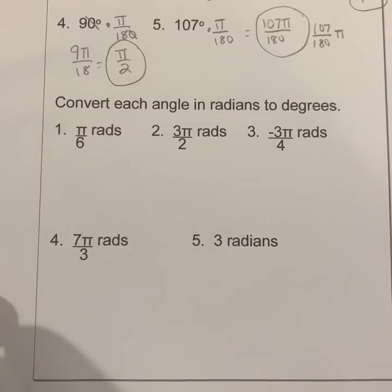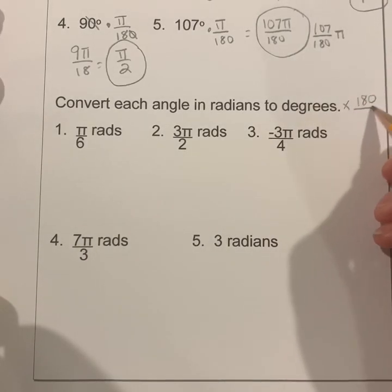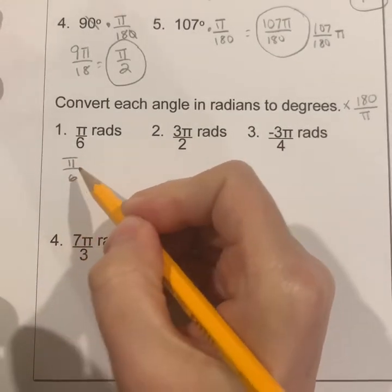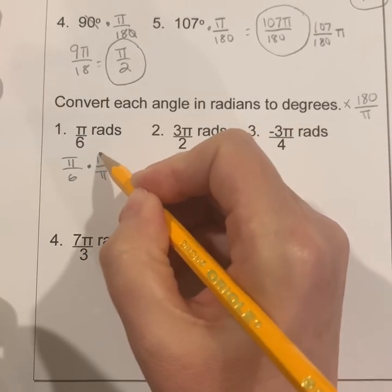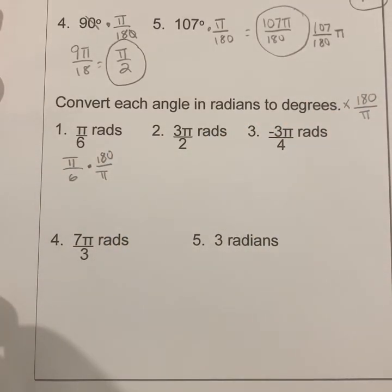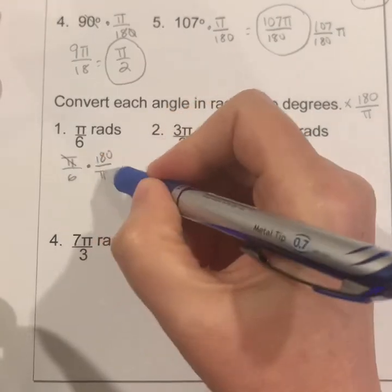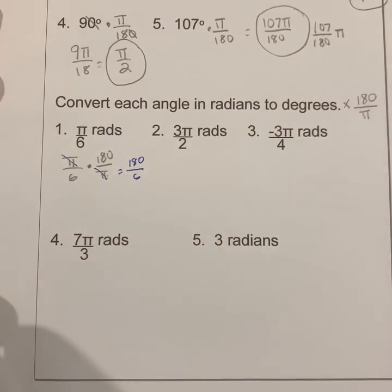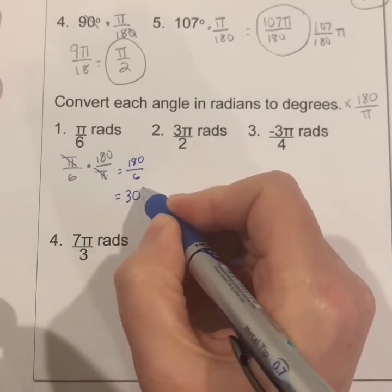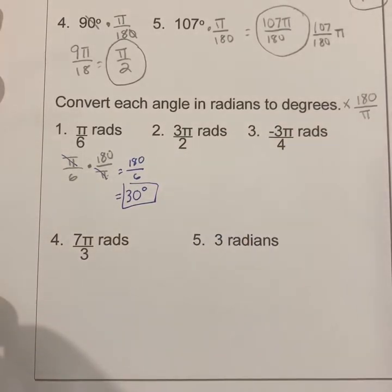To go from radians to degrees, we still use the conversion factor, but instead of multiplying by π over 180, we multiply by the reciprocal 180 over π. If I take π over 6 radians and want to get to degrees, I put the π on the bottom so it cancels. Multiplying π over 6 by 180 over π, the π's cancel, leaving 180 divided by 6, which is 30 degrees. So π over 6 radians equals 30 degrees.